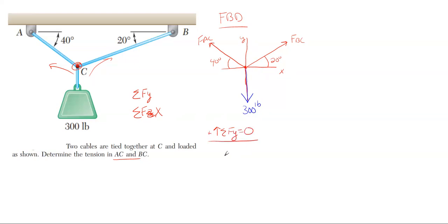We have a vertical summation and a horizontal summation that must be in equilibrium. Starting with the summation in the y-direction: every force with a y-component must cancel and equal zero. We take everything upward as positive and everything downward as negative. Starting with our unknowns: FAC is up and to the left, so its y-component is upward - this gives us positive FAC. We utilize the angle to resolve it into the y-direction, which gives sine of 40 degrees.